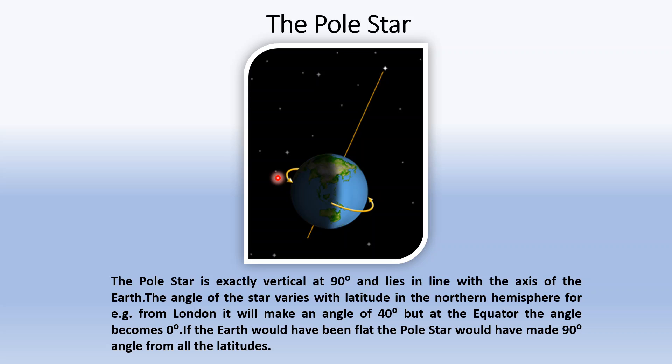While the equator which is at 0 degrees will make an angle of 0 degrees from the pole star. Had the Earth been flat, the pole star would have made 90 degrees from all latitudes.